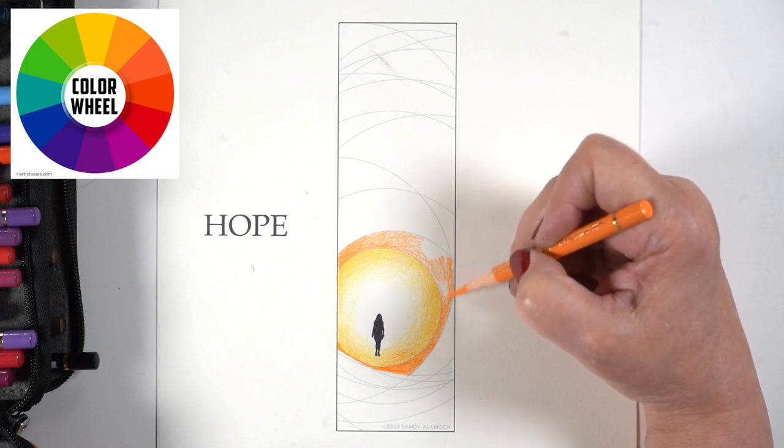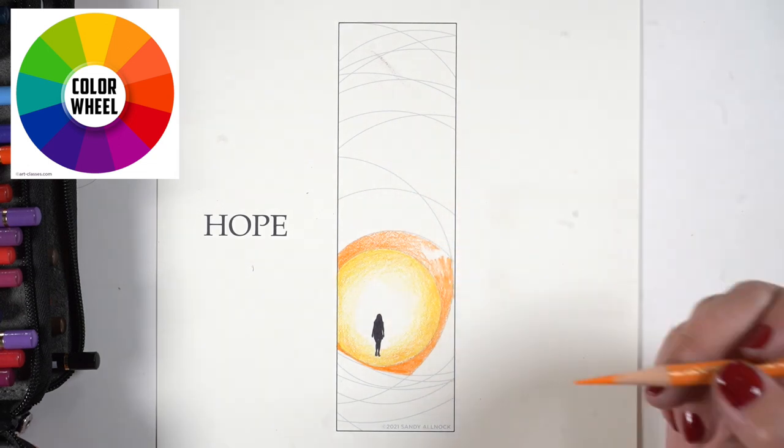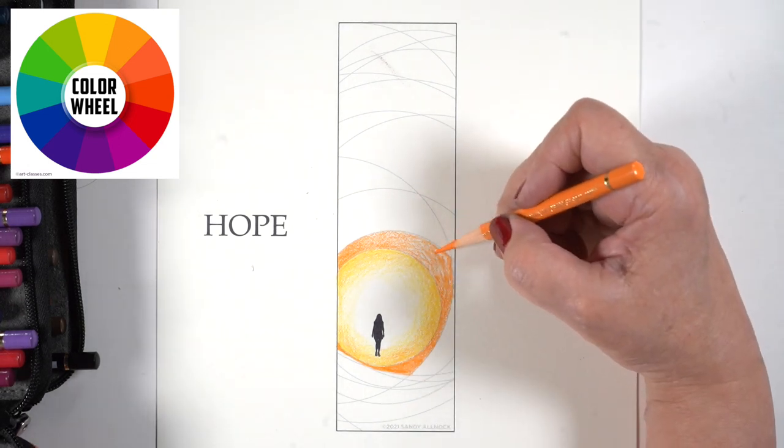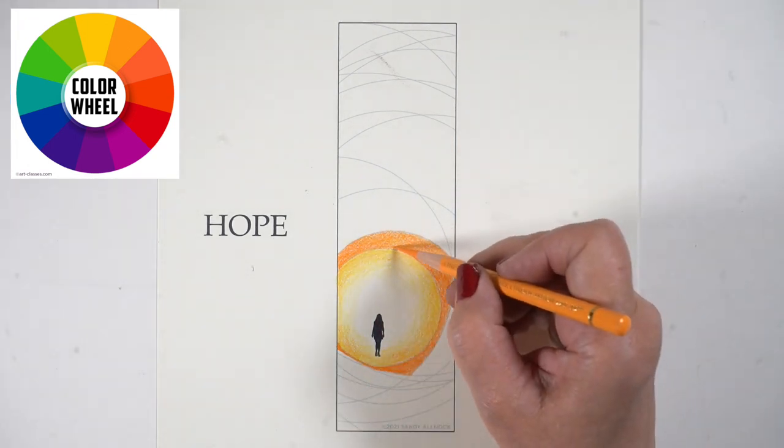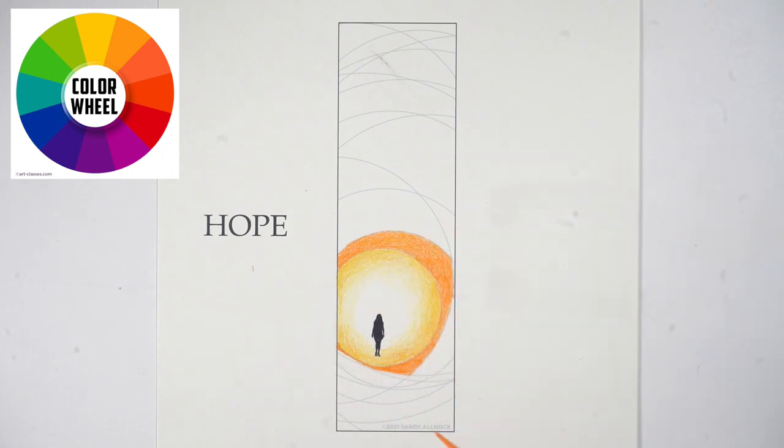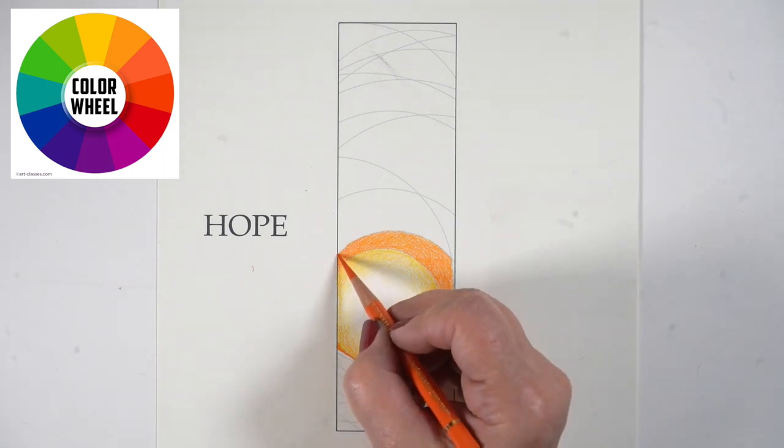I've got the color wheel up in the corner. That's really how I'm basing all of these videos during the Advent series. All the bookmarks will have some sort of relation to the color wheel, and I've started with warm colors around the central figure. There is a second page to the PDF with no figure in it.